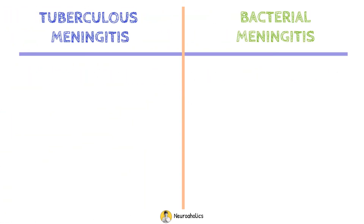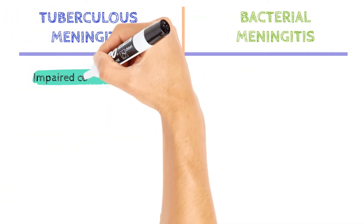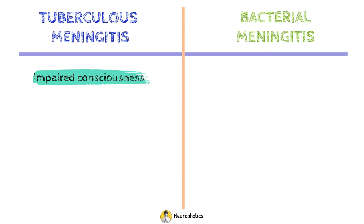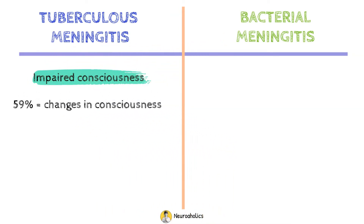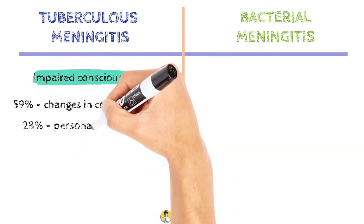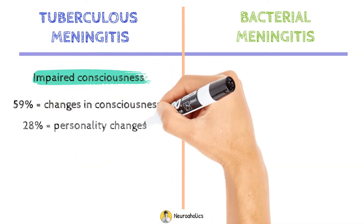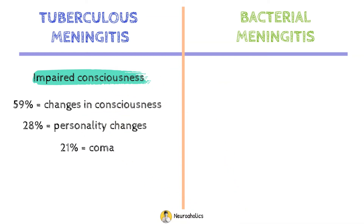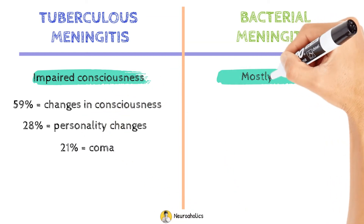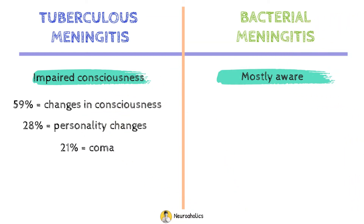Second, patients with tuberculous meningitis often have impaired consciousness. In the same study of 160 patients with tuberculous meningitis, 59% reported changes in consciousness, 28% had personality changes, and 21% were in a coma. Bacterial meningitis rarely causes symptoms like this.